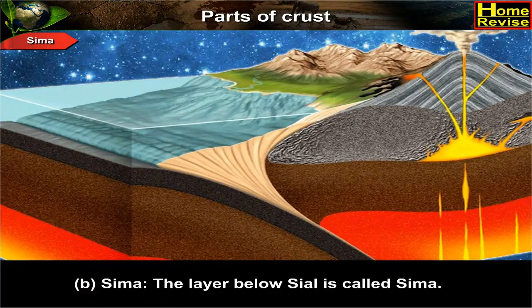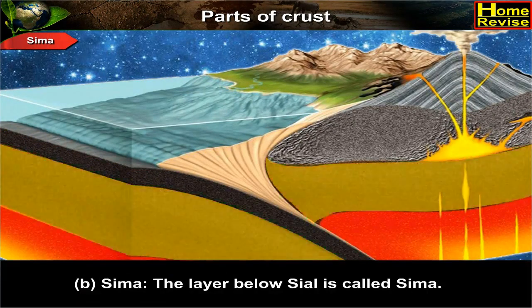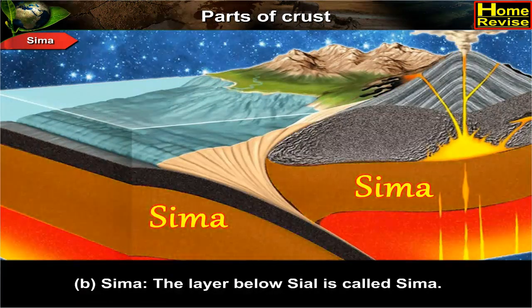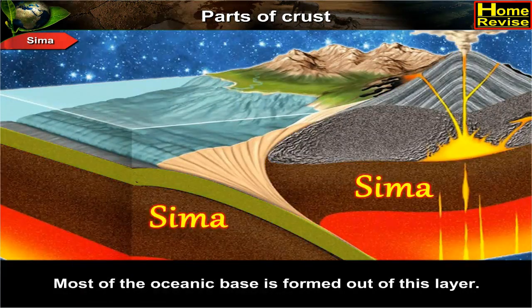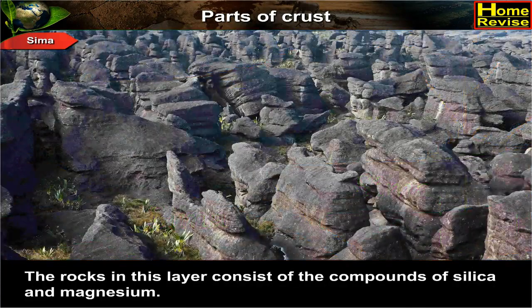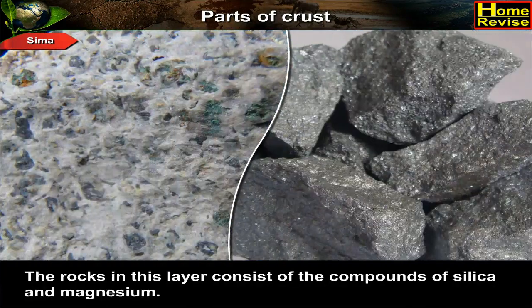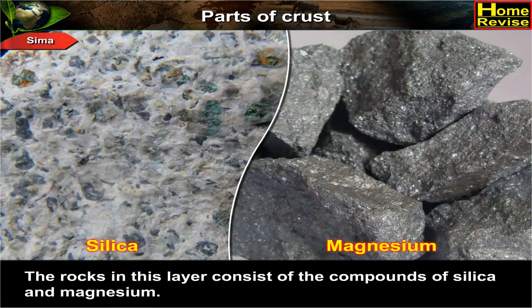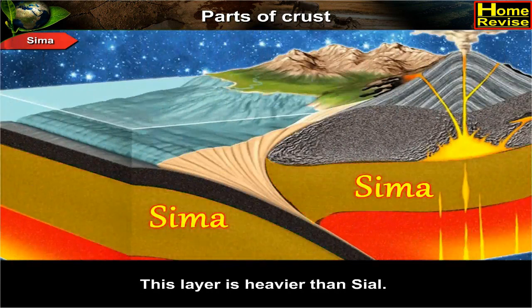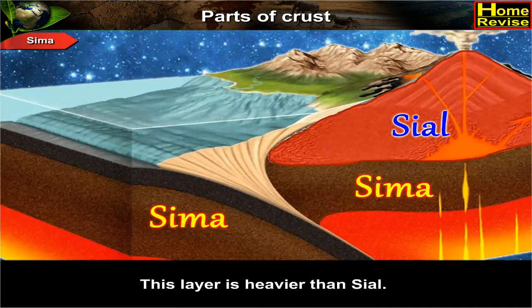Sima: The layer below Sial is called Sima. Most of the oceanic base is formed out of this layer. The rocks in this layer consist of the compounds of silica and magnesium. This layer is heavier than Sial.